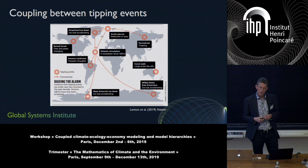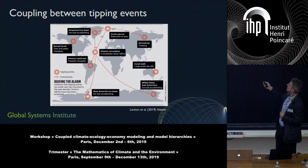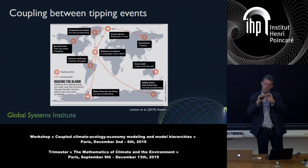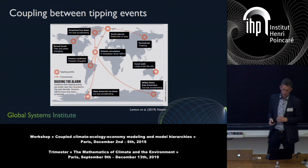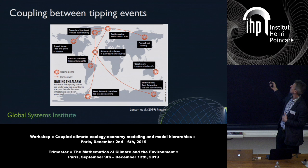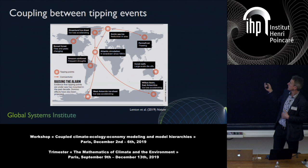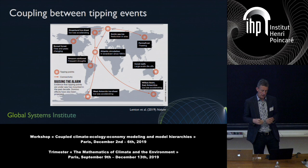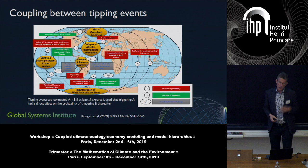We know from the paleo record that if you slow the overturning circulation down, you're transporting less heat from the southern to the northern hemisphere, so you drag the whole band of rainfall around the tropics — the Intertropical Convergence Zone — southwards. That tends to disrupt the monsoons in West Africa and also around the planet in India, as well as over in South America. And by leaving more heat behind in the southern ocean, that could ultimately contribute to the ice shelf melt and ice sheet threat down there.